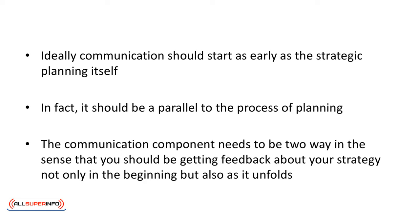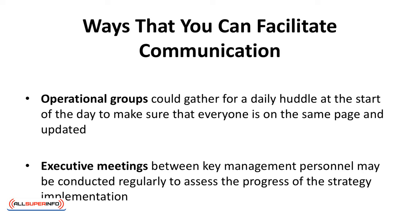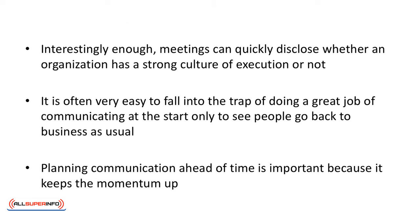The communication component needs to be two-way in the sense that you should be getting feedback about your strategy, not only in the beginning but also as it unfolds. There are quite a few different ways that you can facilitate this communication. For instance, regular meetings are one way to go. Operational groups could gather for a daily huddle at the start of the day to make sure everyone is on the same page and updated. Executive meetings between key management personnel may be conducted regularly to assess the progress of the strategy implementation. Interestingly enough, meetings can quickly disclose whether an organization has a strong culture of execution or not. For instance, if a meeting consists of a long presentation while other attendees sit quietly, unwilling to raise questions knowing that their own presentation will follow soon, then there's a cause for concern. This scenario depicts an organization without a culture of execution and a place where even the best strategy may fail.